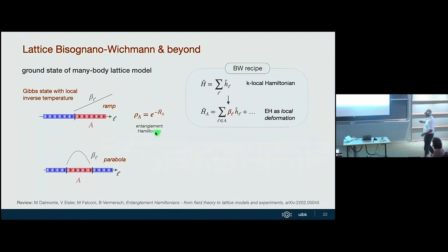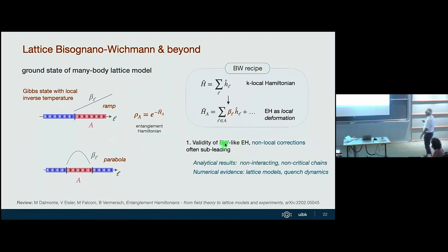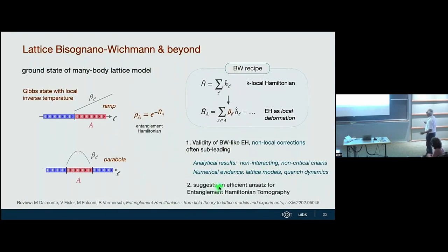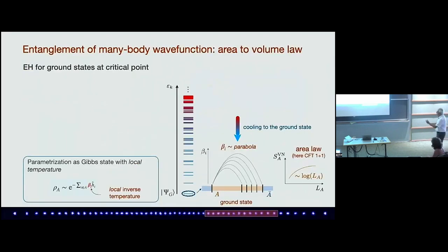If you adapt these ideas to the lattice — now looking at the ground state of a many-body model rather than the vacuum — the substitution rule is that you get the entanglement Hamiltonian by writing down the system Hamiltonian and deforming it. The CFT prediction is that this deformation is a parabola. There is a lot of analytical and numerical evidence for this, and these ideas suggest that for an efficient entanglement Hamiltonian tomography, it is a deformation of the system Hamiltonian — you find what the parameters are, and also test for additional terms with your quantum protocol.